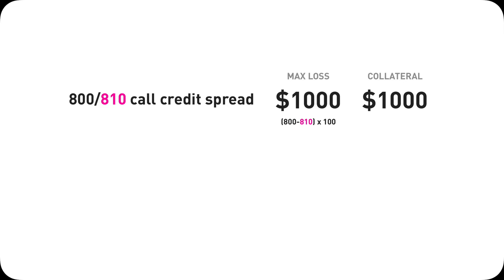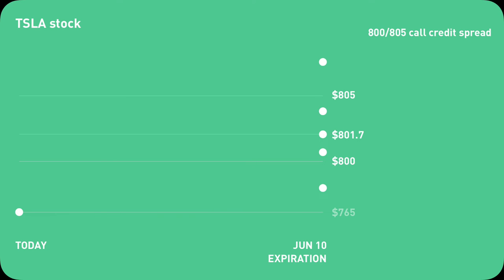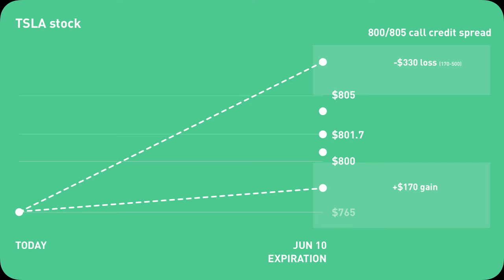The max loss for an $800/$810 call credit spread is $1,000; for an $800/$815 call credit spread it's $1,500. As you can see in the pattern, it's always the difference between two strike prices times $100. The outcome of any call credit spread has five scenarios. If Tesla stock ends below $800, you win — you keep the whole $170 and the $500 collateral gets released back to you. If Tesla stock ends above $805 by expiration date, you lose — you still keep the $170 but you lose the $500 collateral, so your net loss is $330.